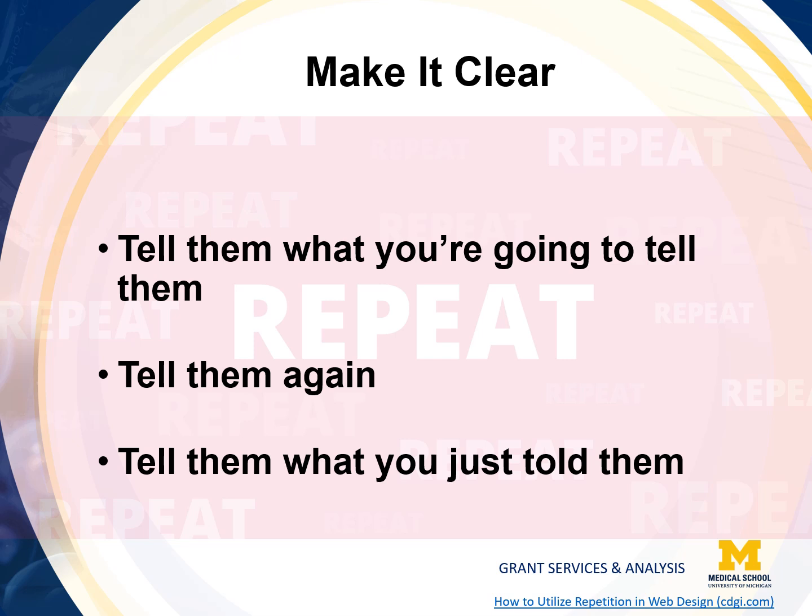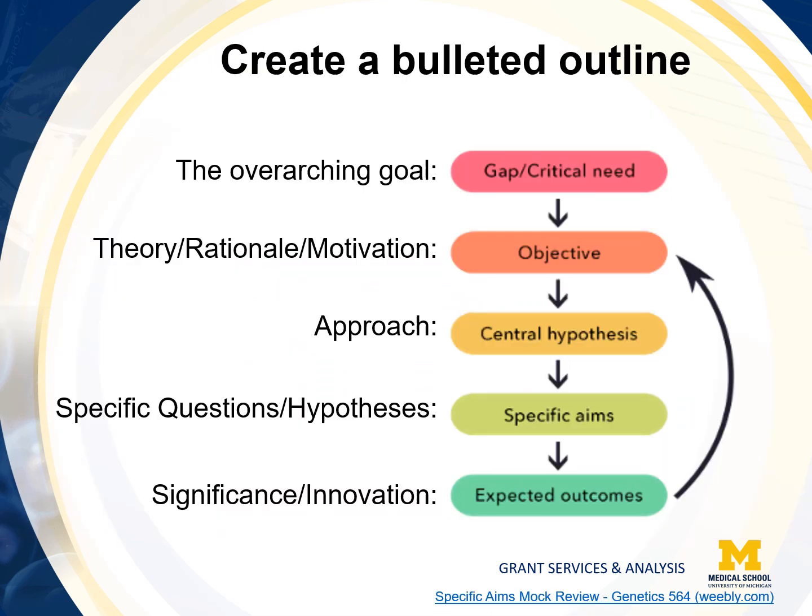Tell them what you just told them — reiterate your salient points. This is the opportunity to give reviewers a reason to believe in your idea and in you. Once again, demonstrate how you and your team are the ones to deliver on the message. It is recommended that you start with a bulleted outline. Here, you can write out brief bullets to better see how each component relates to each other, as well as to determine the extent by which the logic and concepts of your aims flow linearly.